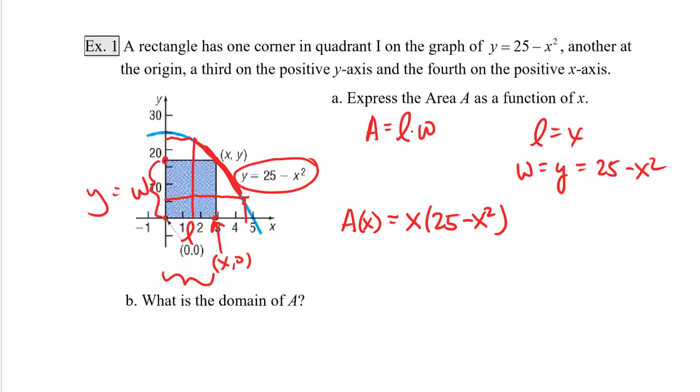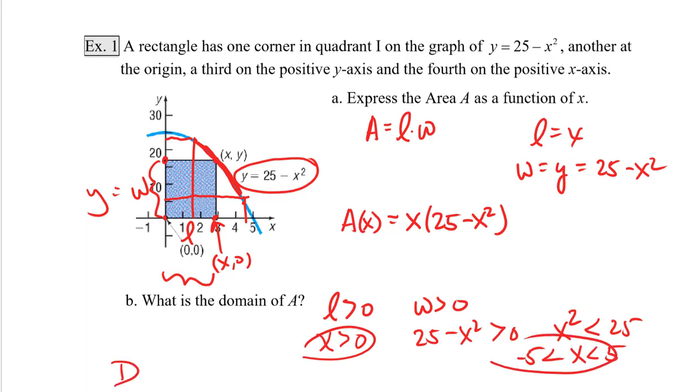Part B, what is the domain of A? So we need to know what values of x will work in this model. Now certainly a rectangle cannot have any area if its length and width are not positive. So we know that L has to be greater than 0 and w has to be greater than 0. If L is x, then we know that x has to be greater than 0. If w is 25 minus x squared, that also has to be greater than 0. Now this will simplify into x squared has to be less than 25. And if I take the square root of both sides, I get that x has got to be between 5 and negative 5. Now if I do the overlap of these two inequalities, the domain is going to be x such that x has to be between 0 and 5.